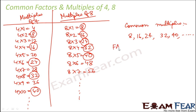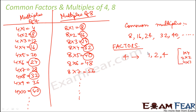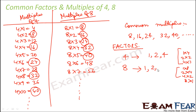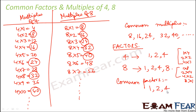Now what about factors? We need to determine the factors first. The factors of 4 are 1, 2, and 4 because 4 can be written as 1×4, 2×2, and 4×1. Similarly, the factors of 8 are 1, 2, 4, and 8 because 8 can be written as 1×8, 2×4, 4×2, and 8×1. The common factors between 4 and 8 are 1, 2 and 4.